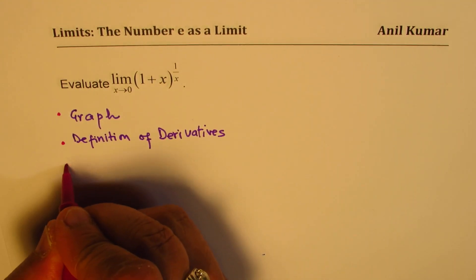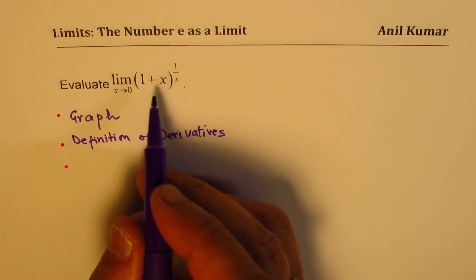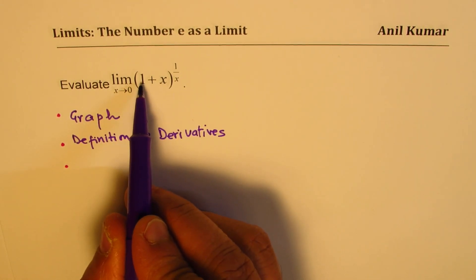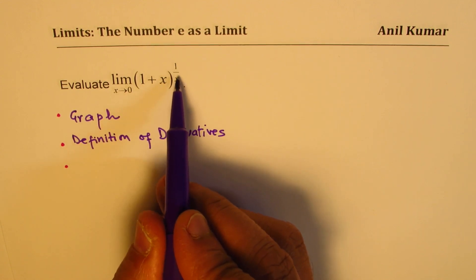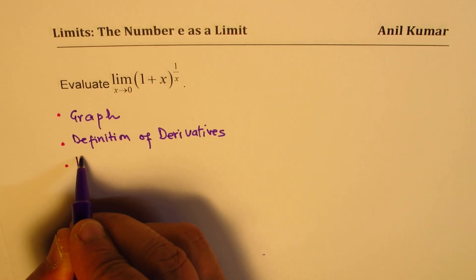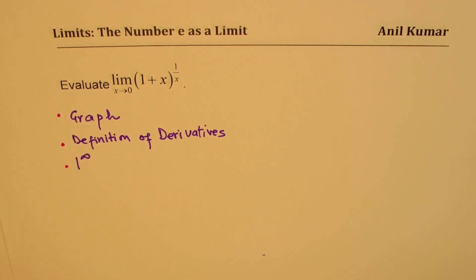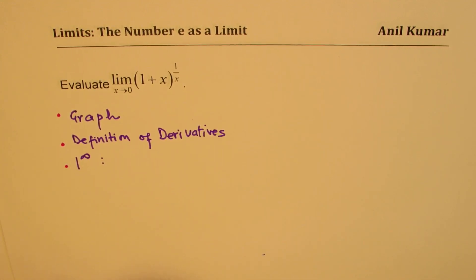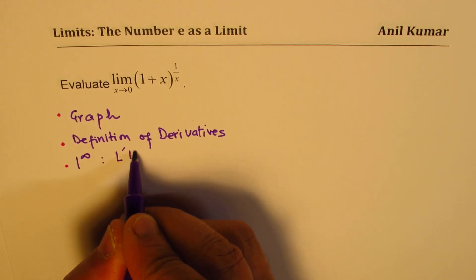Those who have already done calculus 1 and are heading towards calculus 2 will realize that substituting 0 makes this function 1 to the power of 1 over 0, which is infinitely large. So it is an indeterminate of the form 1 to the power of infinity — our class C type of indeterminate — which we could solve by L'Hôpital's rule.